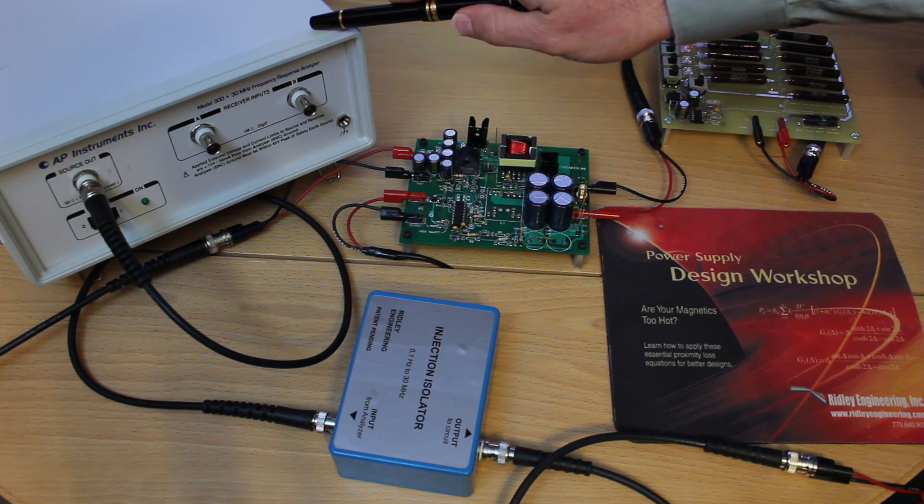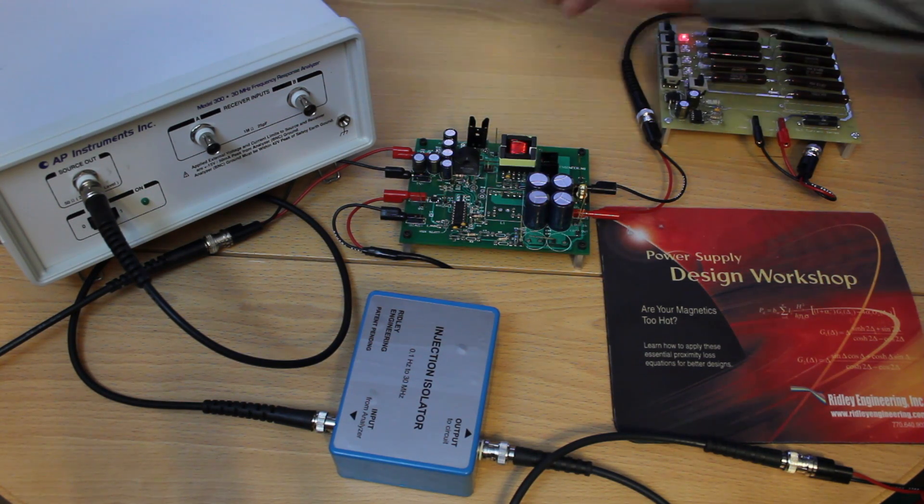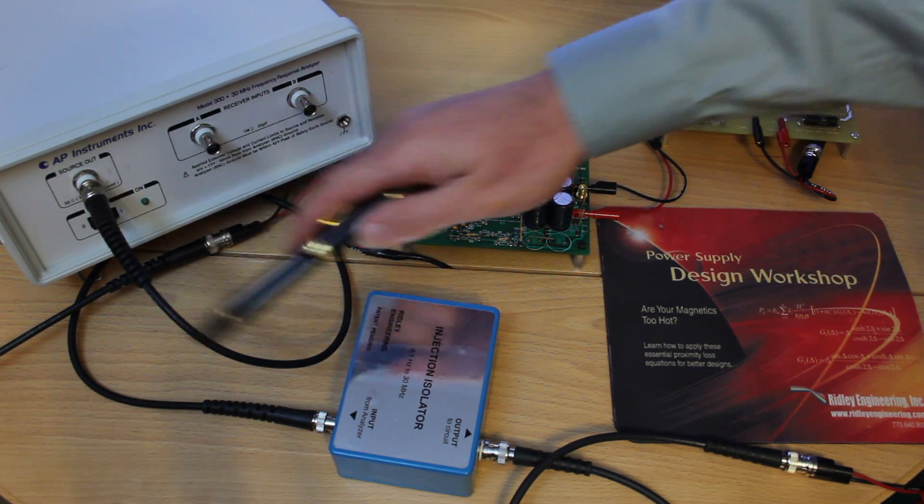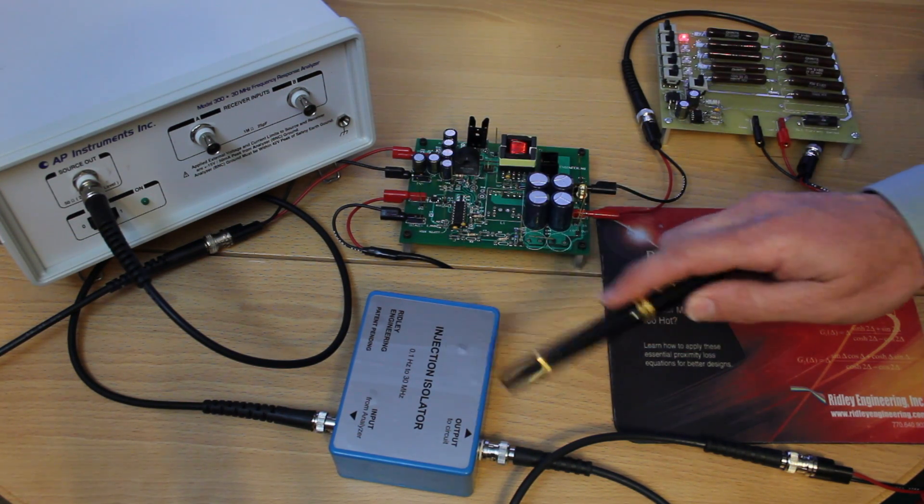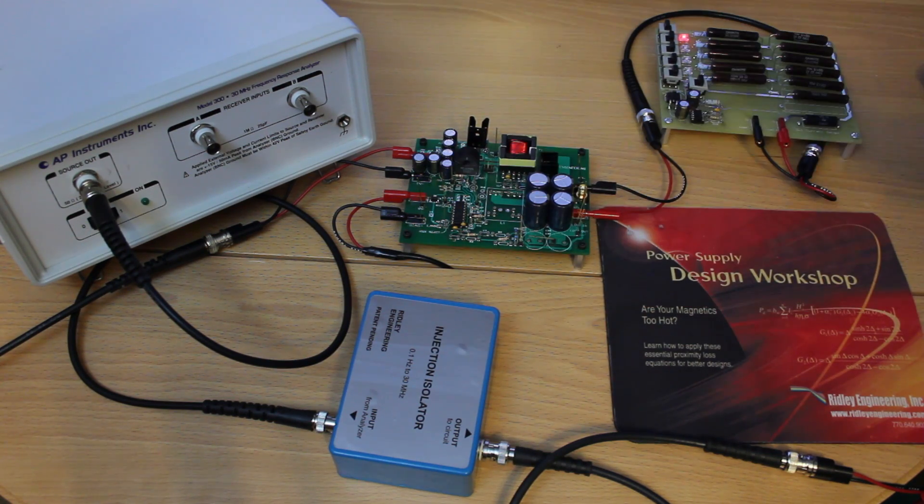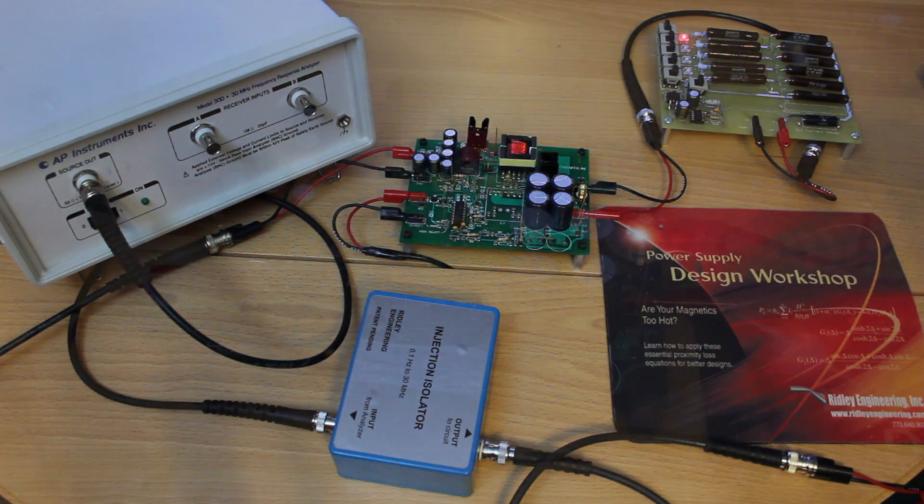Here we have our AP300 frequency response analyzer. The source output comes from here and goes into this extremely wide band injection isolator, which is transformer isolated and works from 0.1 Hertz to 30 megahertz. Now we're going to take the signal from this injection isolator and apply it across the loop resistor in our switching power supply.